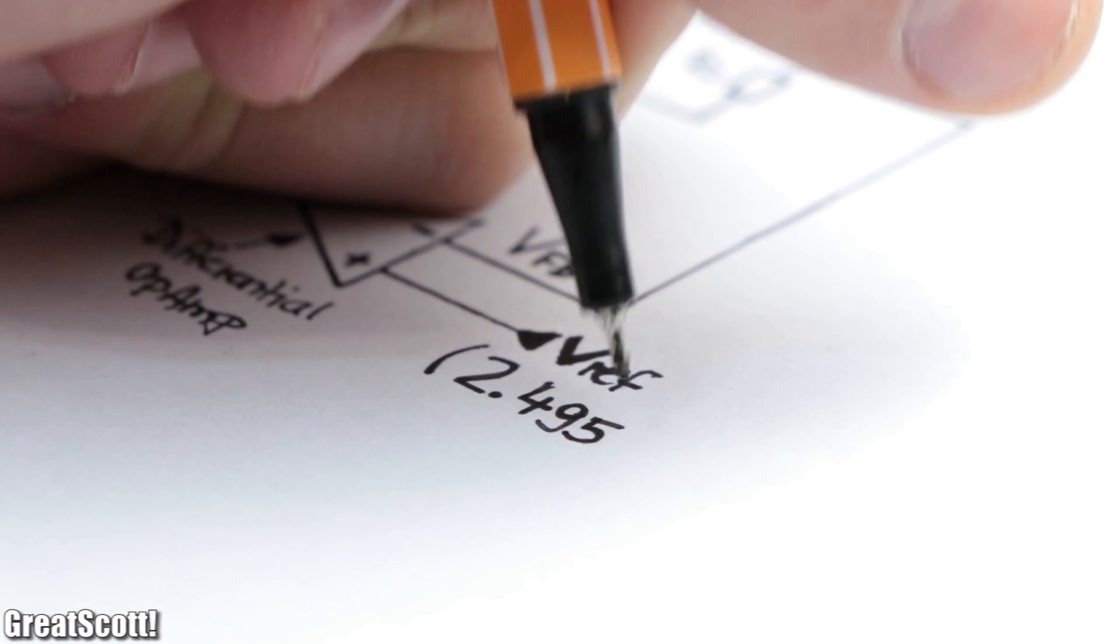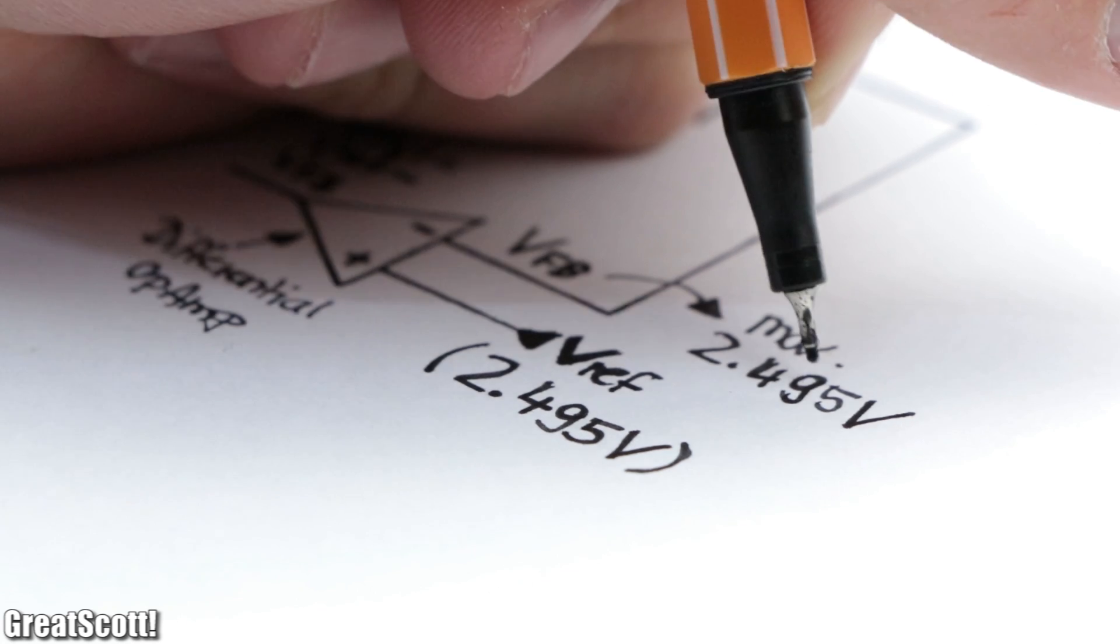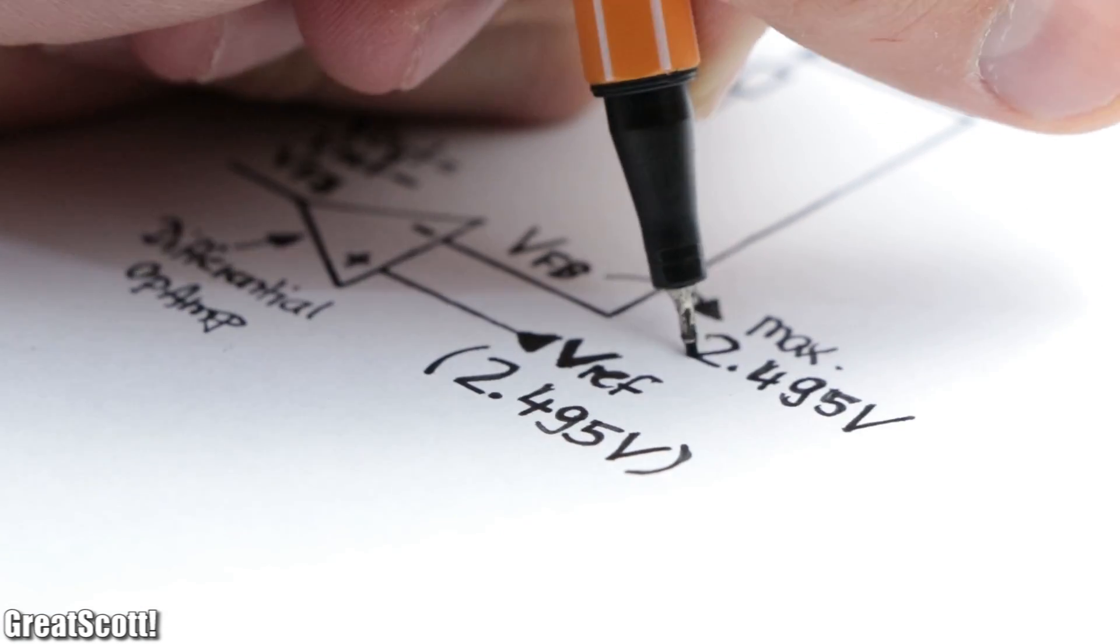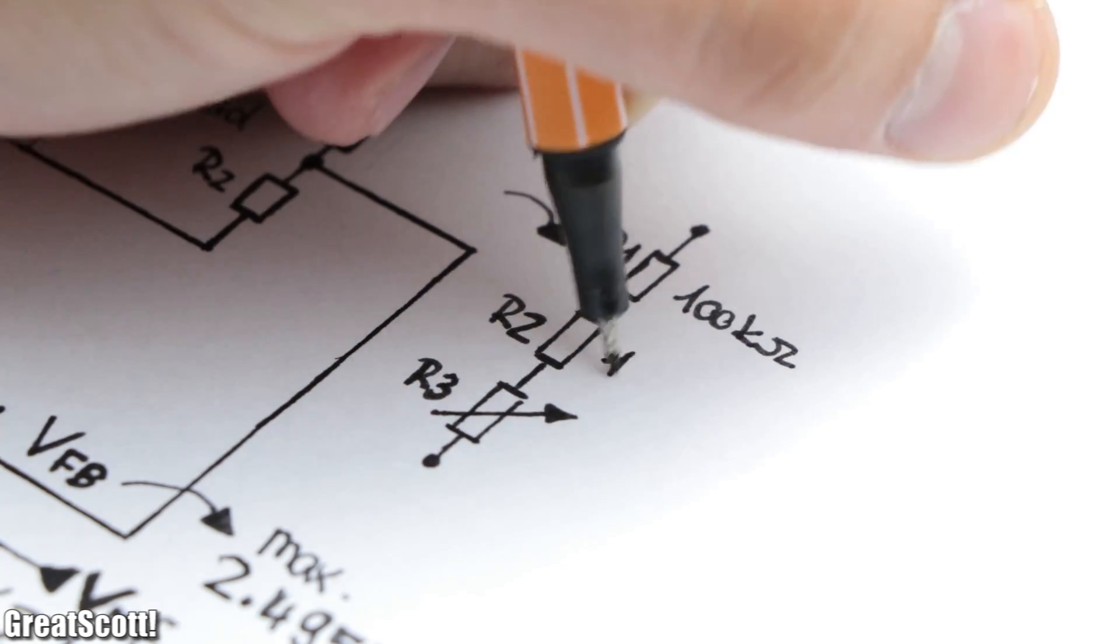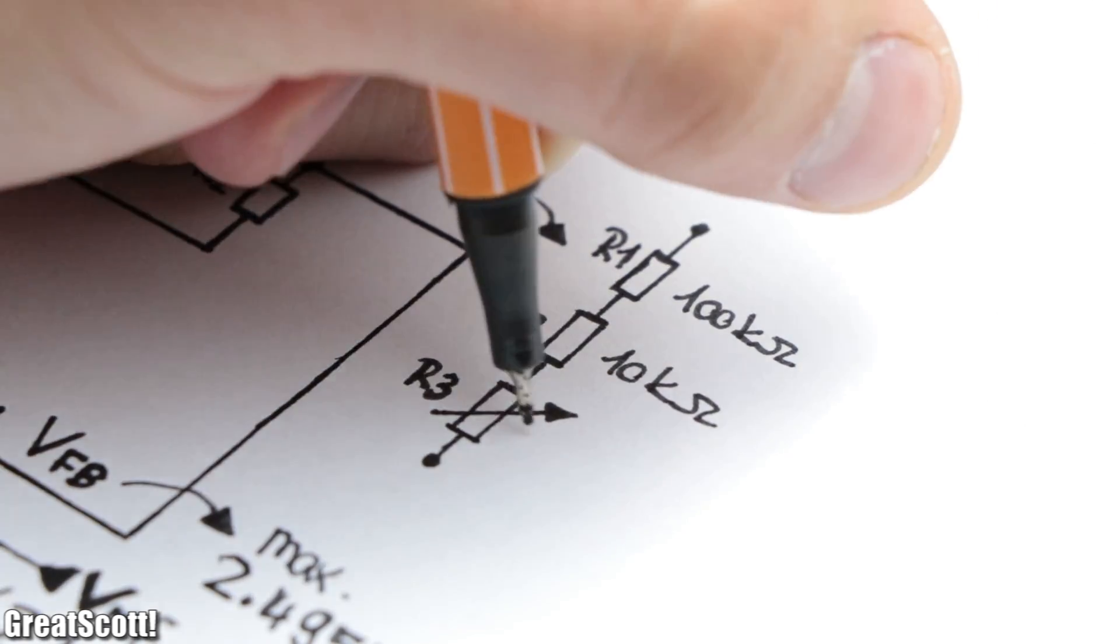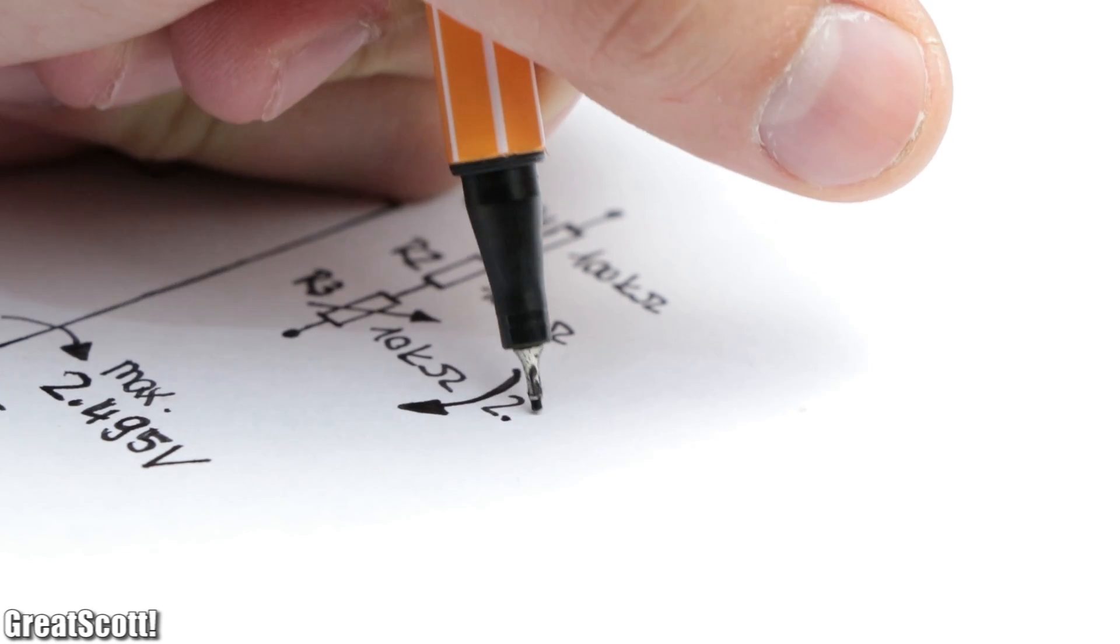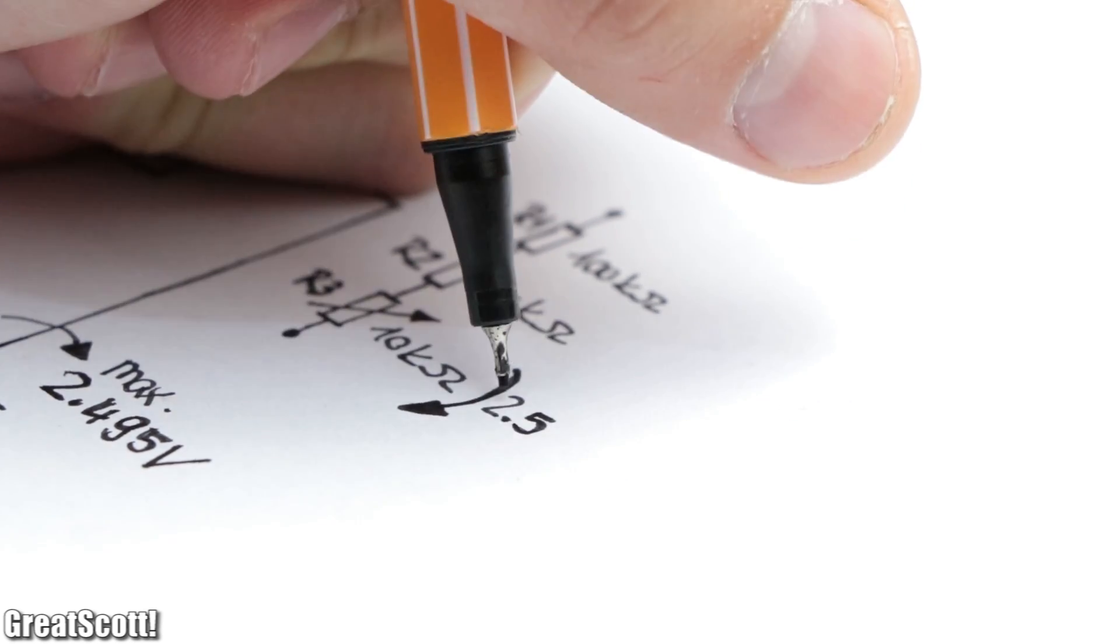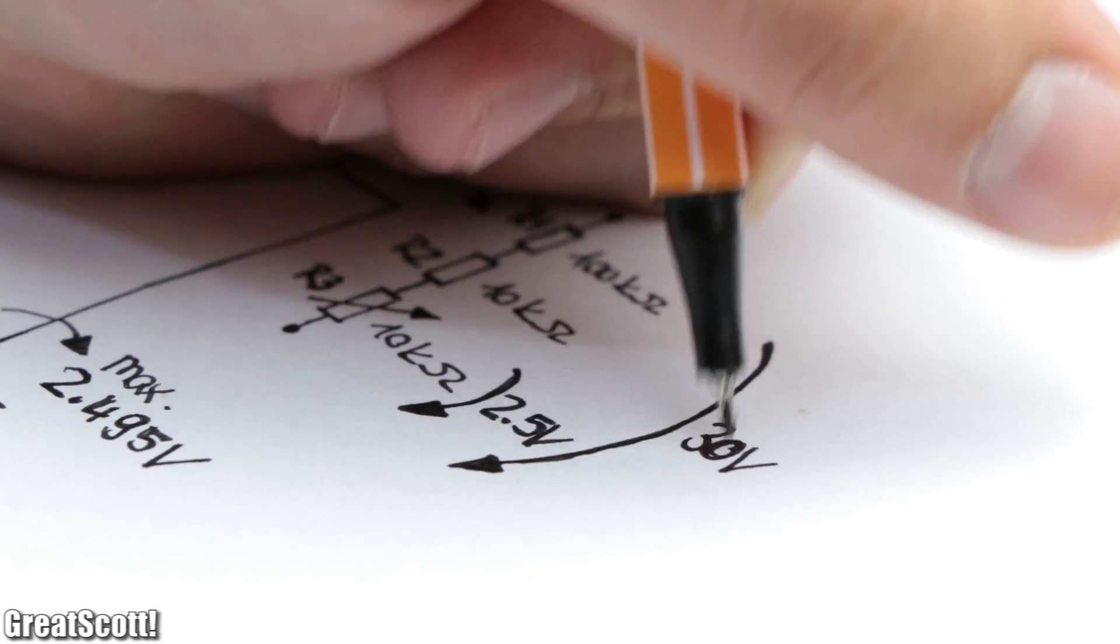Because of the 2.495 voltage limit at the non-inverting input, the voltage at the inverting input should not be higher than that. So I created my voltage divider from a 100 kilo ohm and 10 kilo ohm resistor and a 10 kilo ohm trimmer. This way we would get a 2.5 volt voltage drop across the trimmer at the maximum output voltage of 30 volts.